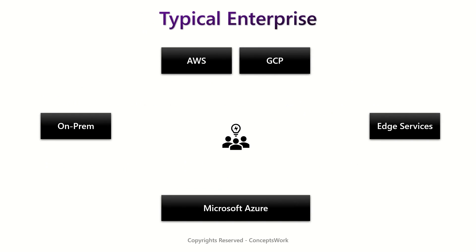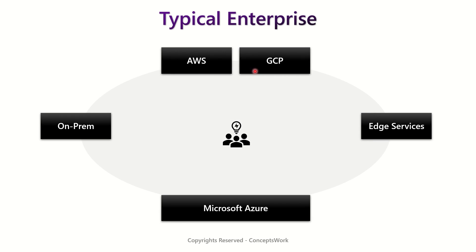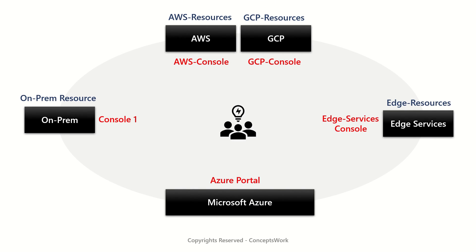Let's understand this with an example of how modern enterprise architectures are defined. Consider a typical enterprise which has an on-prem environment, AWS, GCP, edge services, and obviously Microsoft Azure. The admins managing all these resources across different platforms are practically using five different consoles — one for on-prem, one each for AWS, GCP, edge resources, and Microsoft Azure at portal.azure.com.